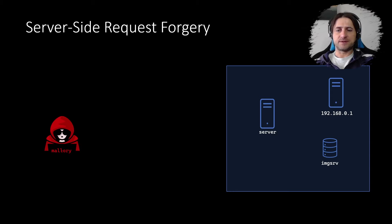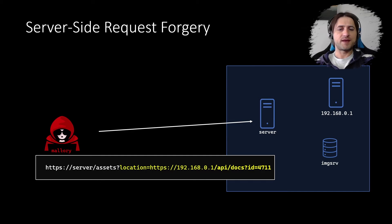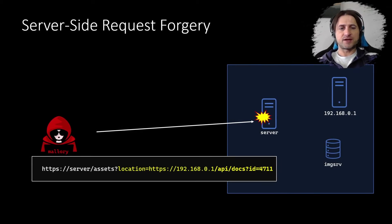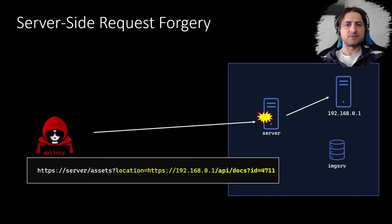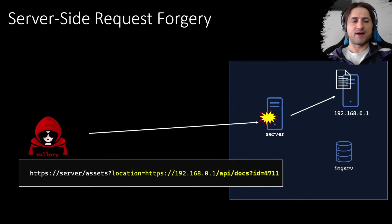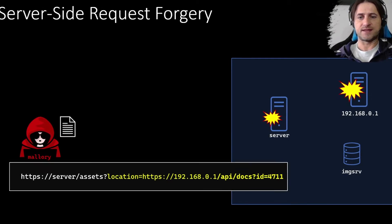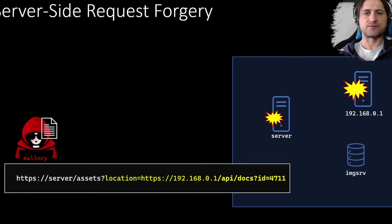Now let's enter Mallory, because Mallory is going to use the server differently. It's the same endpoint, but look how Mallory modified it — it's now pointing to another server in the internal network, 192.168.0.1. The server does the same thing: it creates a new request, but because it's vulnerable to server-side request forgery, it issues this request to that internal machine, accesses a document, downloads it, and serves it to the attacker. This is what a server-side request forgery is.